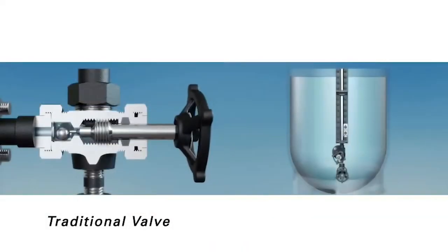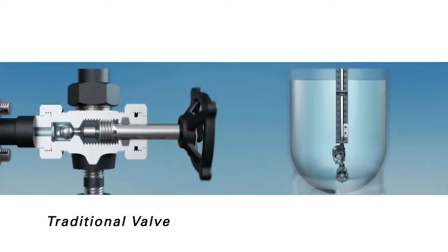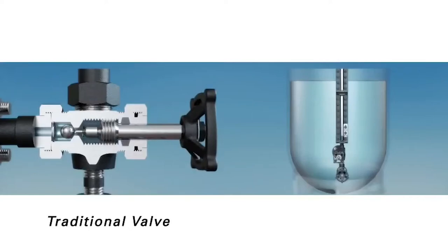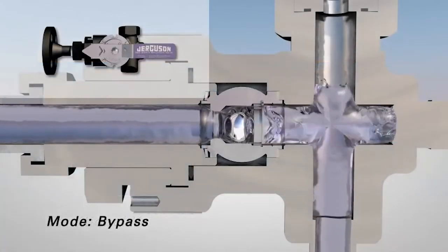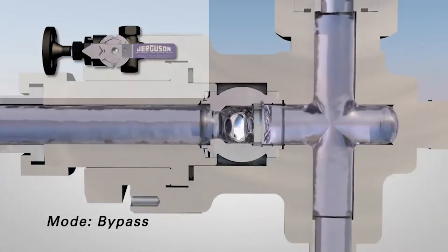When using a traditional ball check valve and commissioning a gauge assembly when there is already liquid present in the vessel, it is common for the user to open the valve too quickly, causing the ball check to engage and the level gauge to display a false level reading. As previously demonstrated, this is eliminated with the new Jerguson 360 ball check valve.